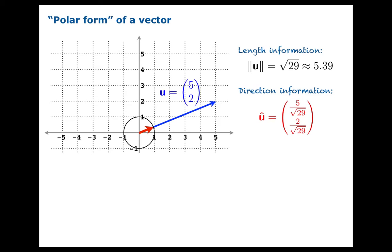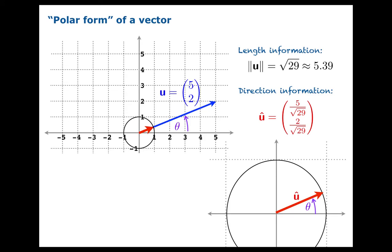Somehow, the direction is encoded in this unit vector. We're going to zoom in on the unit circle here. And we'd like to get our hands on this theta. That would be a nice quantitative way of describing the direction. What is this theta?